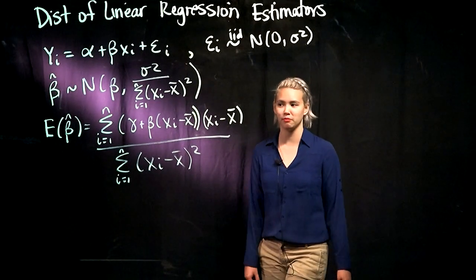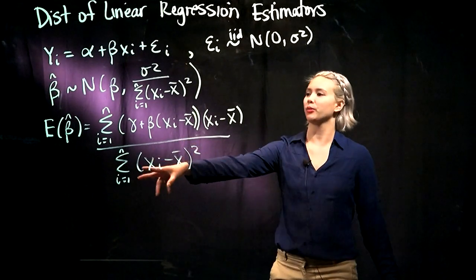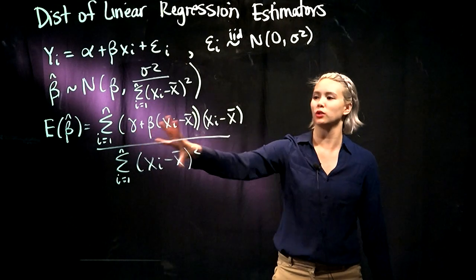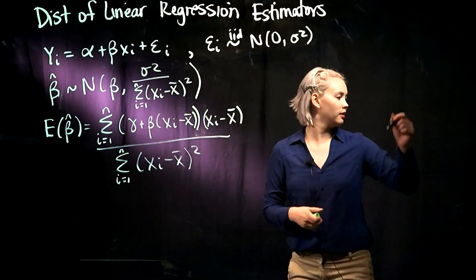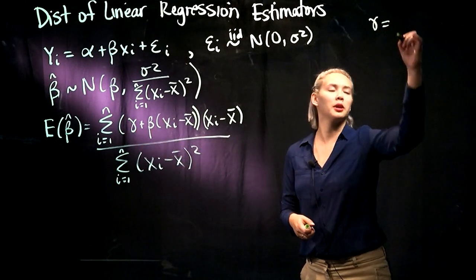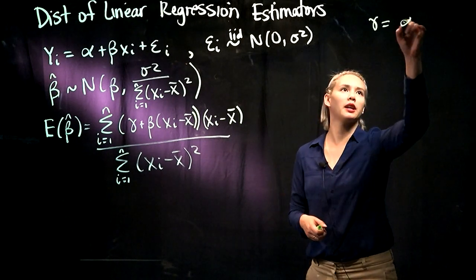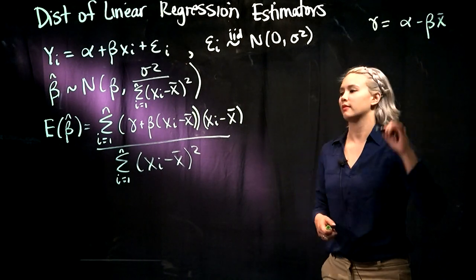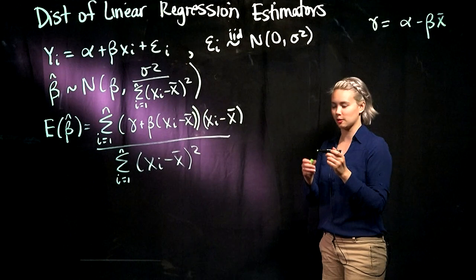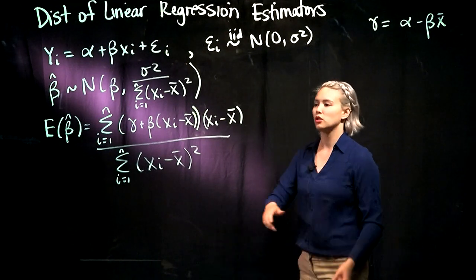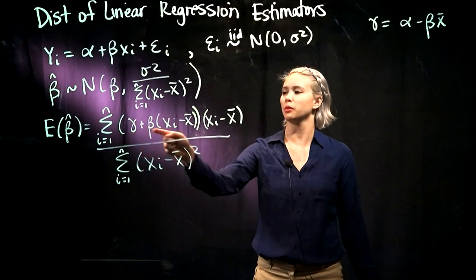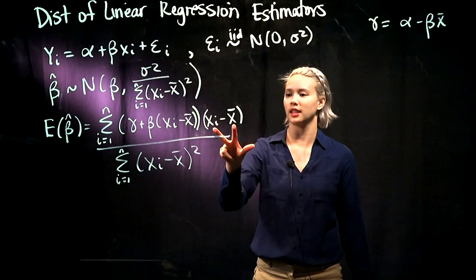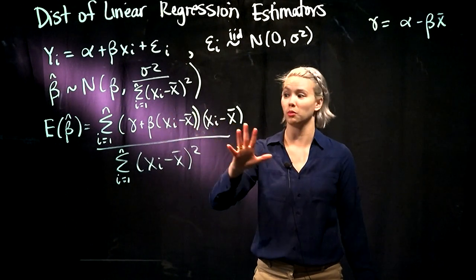We're continuing with the expectation of beta hat. So where we left off, we had expectation of beta hat equal to this. Remember that we set gamma equal to alpha minus beta x bar. So if we want to continue with this expectation, let's go ahead. We have this plus this times xi minus x bar. Let's go ahead and distribute.